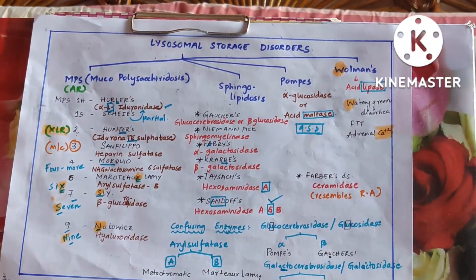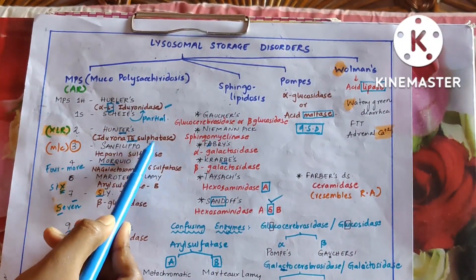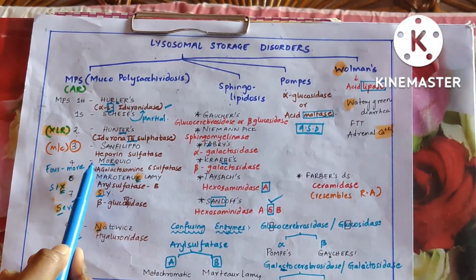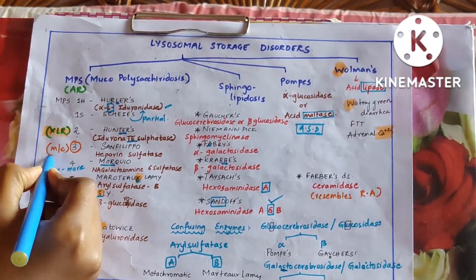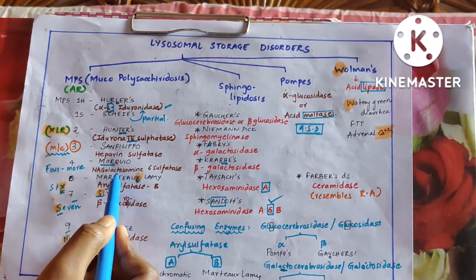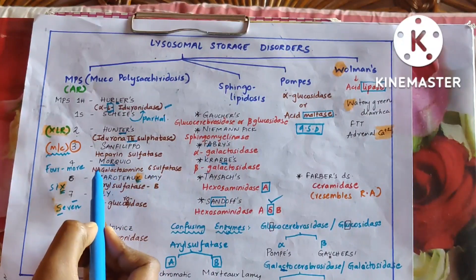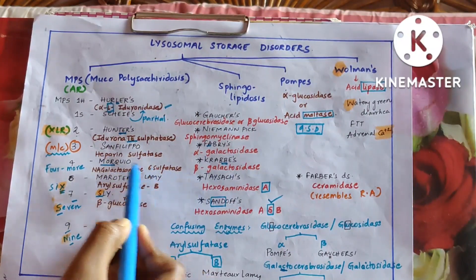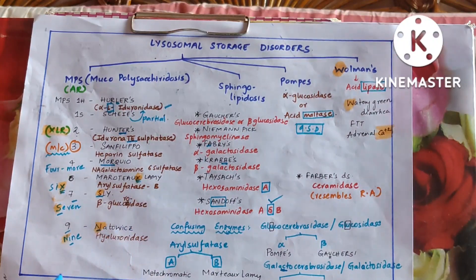Coming to Hunter's: it has 'te' in it, and the enzyme also has 'te' in it — iduronate sulfatase. Sanfilippo is the most common and it is due to heparan sulfatase deficiency. Morquio — that is the more lengthy name — N-acetylgalactosamine-6-sulfatase. Coming to Moroteaux-Lamy, it is arylsulfatase B, and Sly is beta-glucuronidase.